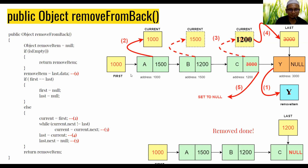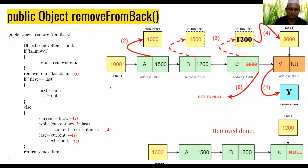If there are more nodes, we go to the else block. The second step is to find the second last node. We already know the last node contains Y; now we need to find the second last node, which contains C.